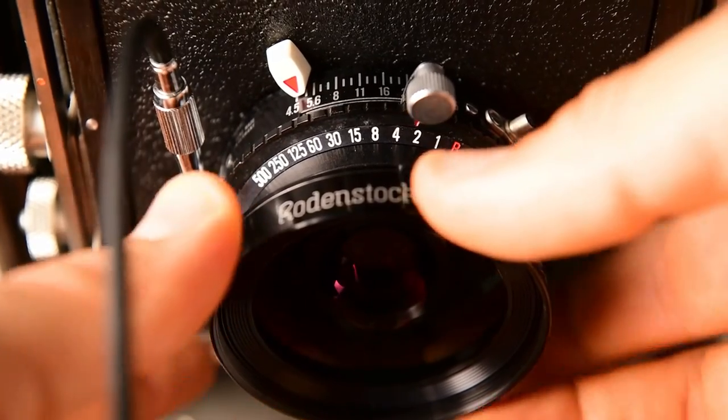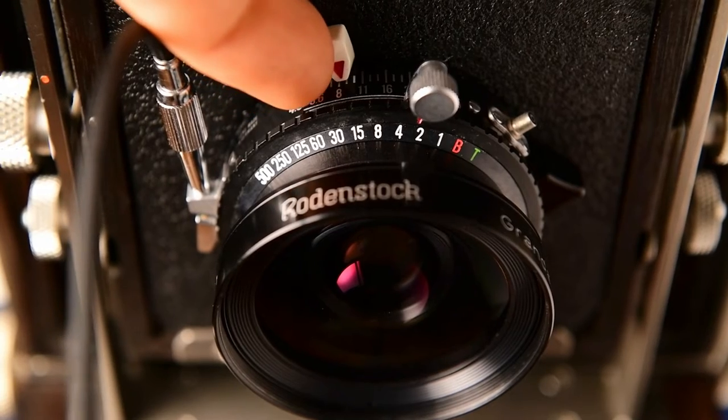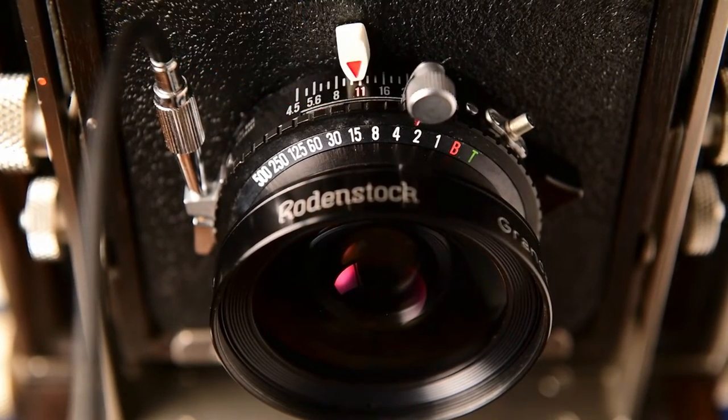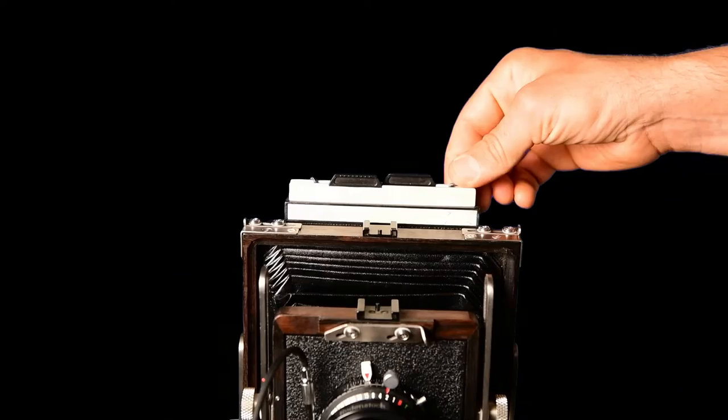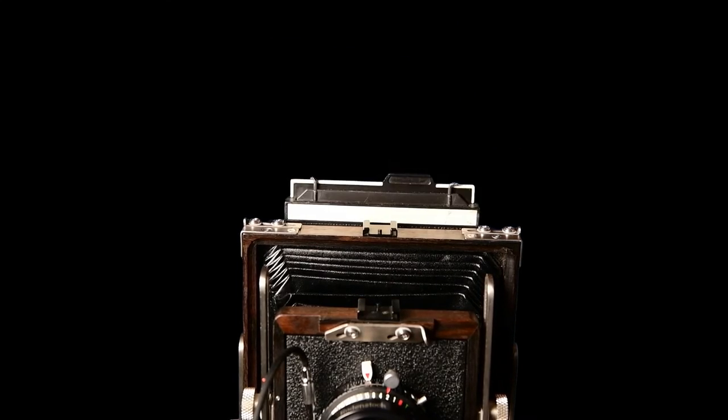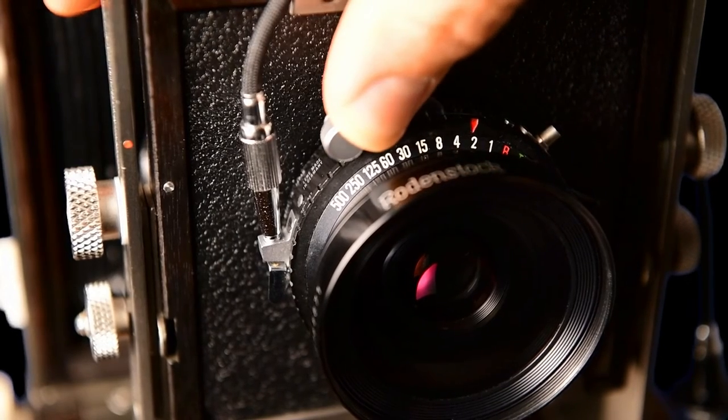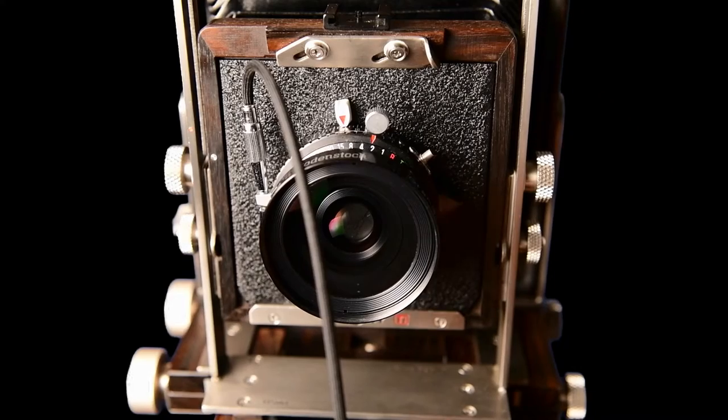Set your shutter speed and aperture. Double check that your shutter is closed and pull the dark slide. Cock the shutter and trigger the shutter, always using a cable release.